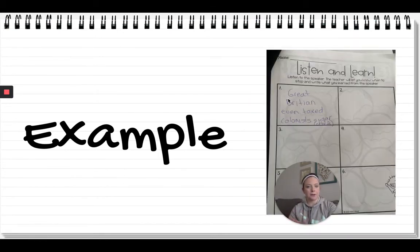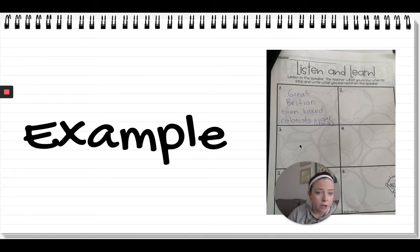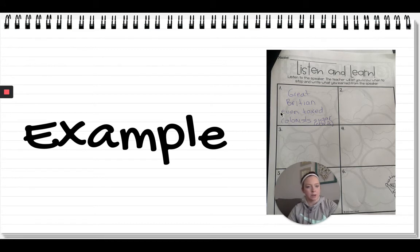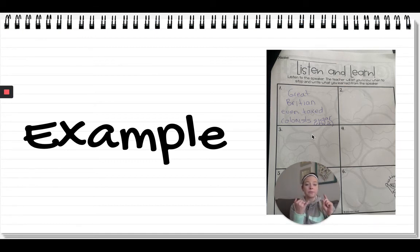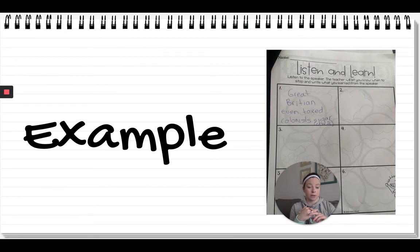Now you're going to see I don't continue on that same graphic organizer. I moved to another one. This other graphic organizer says 'Listen to the speaker — the teacher will let you know when to stop and write down whatever you learned.' Guess who's the speaker? It's me, from listening to that YouTube video of me reading the book. So I wrote down 'Great Britain taxed colonists on sugar — chapter two.' Does everybody see how that works? Listen to the video, write down two or three facts about what you find interesting, about the chapter I read to you about the Declaration of Independence. You can go in any order and use the graphic organizers I gave you.